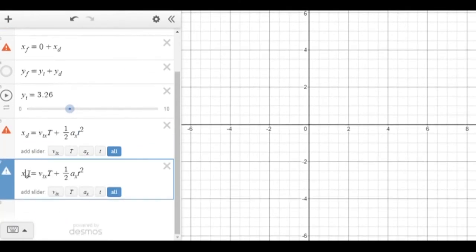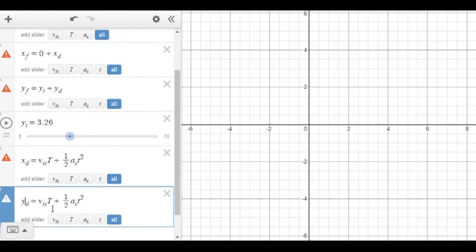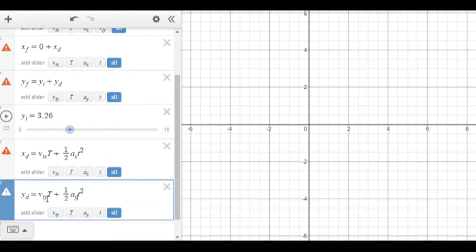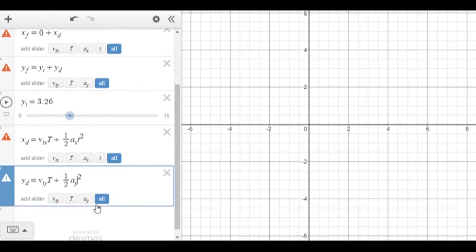And I'm going to copy this equation. Put this down here, and then I'm going to change all the x's to y's, so we have an equation for y. So the change in y is equivalent to the initial y velocity times time, plus one half acceleration y times t squared. And again, I should make this a capital T. This should be a capital T.